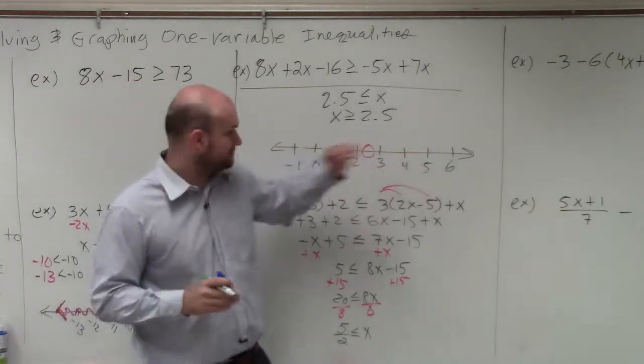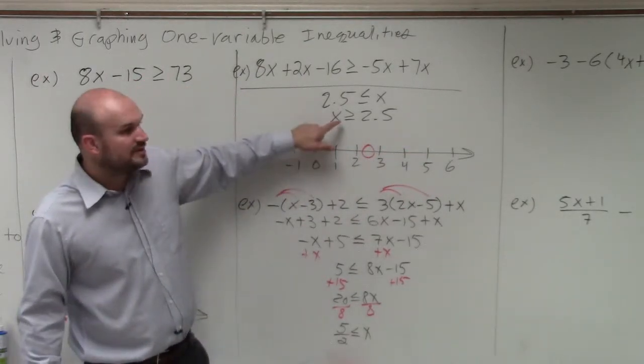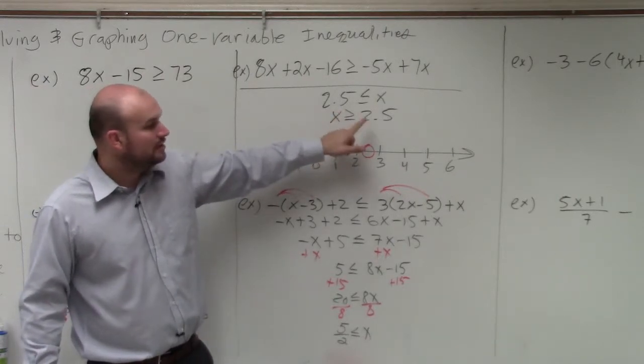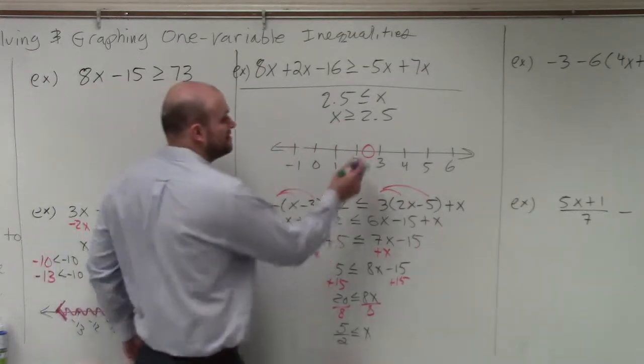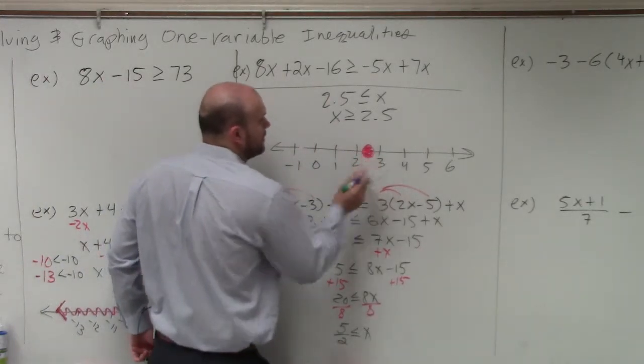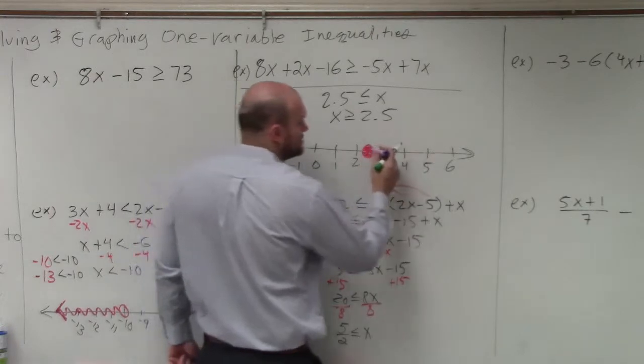Then this is saying x is greater than or equal to 2.5. So it's greater than or equal to, so it's going to be enclosed. And then all the values that are greater than 2.5 are going to be going to the right.